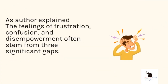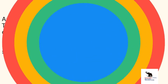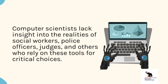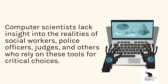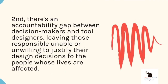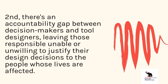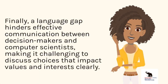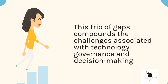As the author explains, feelings of frustration, confusion, and disempowerment often stem from three significant gaps. First, there's an experience gap between those who create predictive tools and those who utilize them for decision-making — computer scientists lack insight into the realities of social workers, police officers, judges, and others who rely on these tools for critical choices. Second, there's an accountability gap between decision-makers and tool designers, leaving those responsible unable or unwilling to justify their design decisions to the people affected. Finally, a language gap hinders effective communication between decision-makers and computer scientists, making it challenging to discuss choices that impact values and interests clearly.